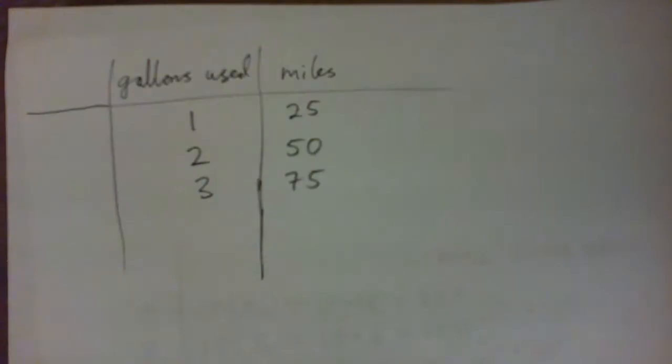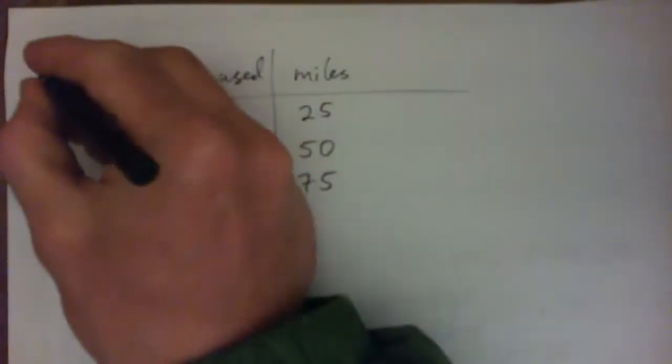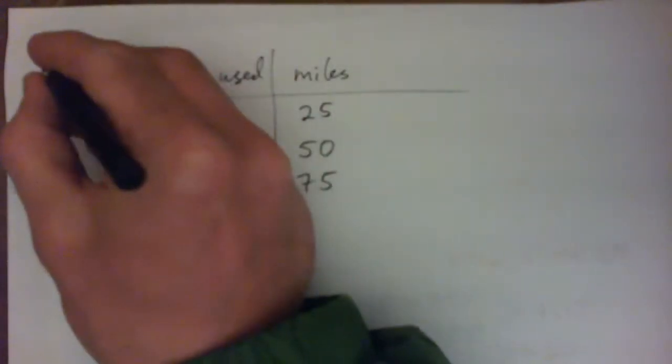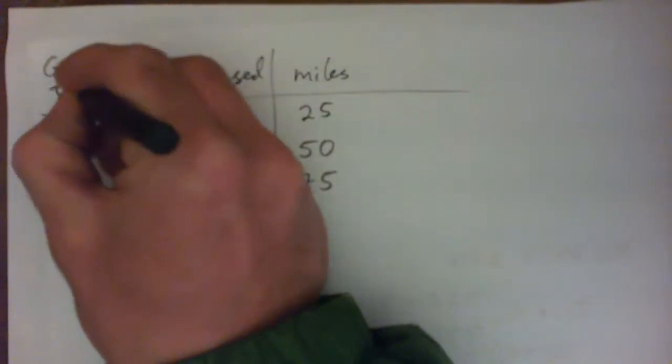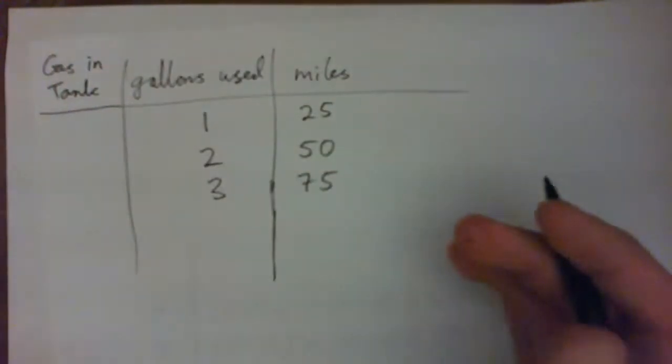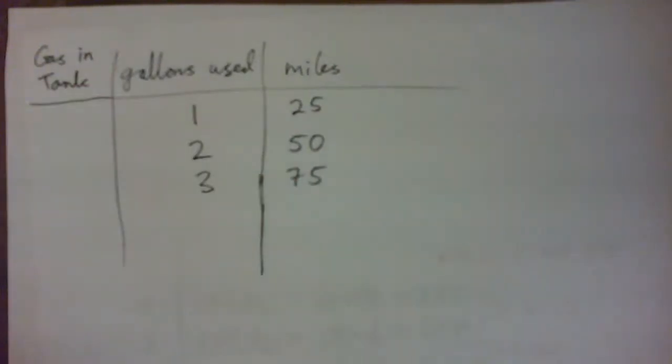Right, right. For gallons used it is, but I guess a slight twist is the number of miles I can drive is a linear function of the number of gallons of gas in the tank. So you could say gas in tank. Okay, and I guess we'll make it up.